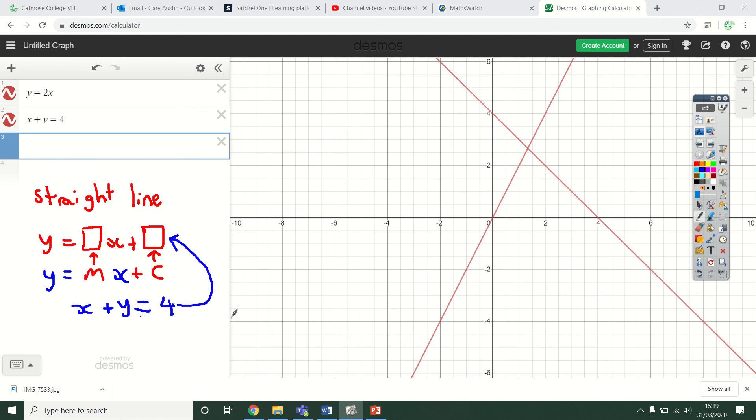To do that, I'm going to subtract x from both sides. Then you end up with y left on this side because the x and minus x cancel out. On the right hand side you've got the 4 still, but you've subtracted x. So sometimes you might need to rearrange your straight line to put it into this familiar shape.